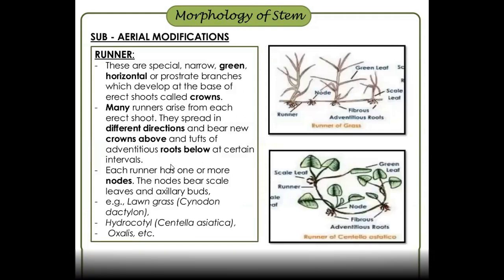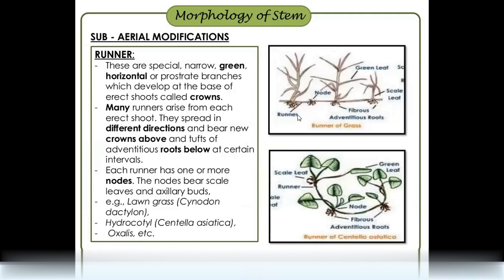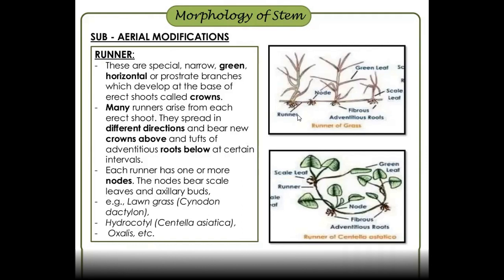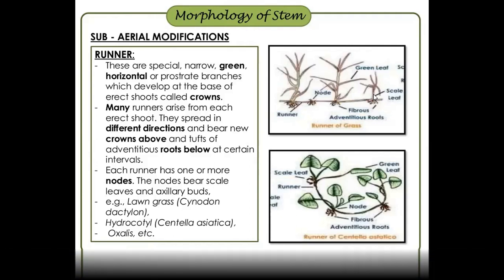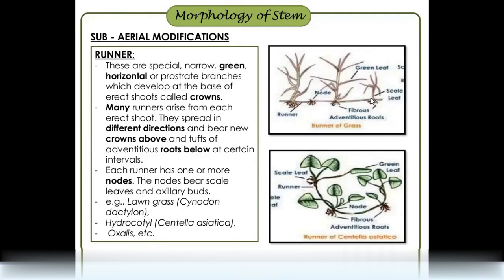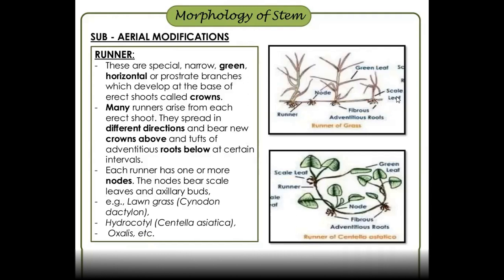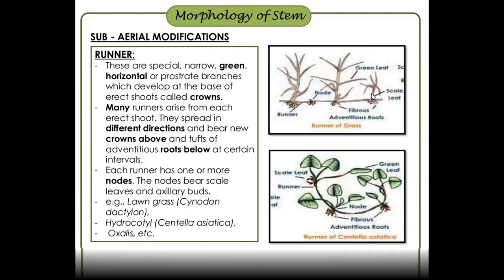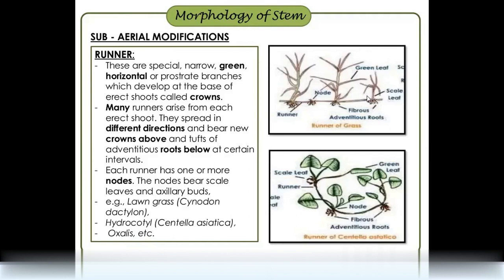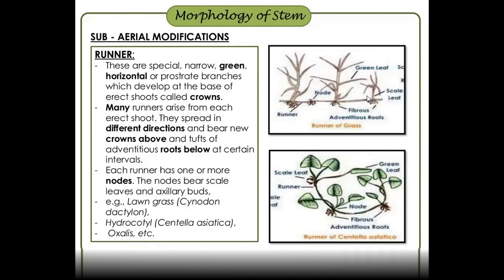Bulbils are seen in Dioscorea. These are sub-aerial modifications. Sub-aerial modifications include runners, stolons, offsets, and suckers. For a runner, for example grass — lawn grass — runs in horizontal directions. The main stem has a root system with adventitious roots. Runners run horizontally. Examples: Cynodon, Hydrocotyle, and Oxalis.